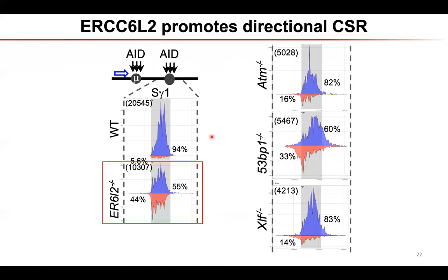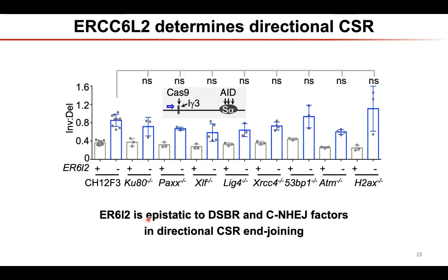We used HTGTS technology to check the end-joining patterns. For wild-type cells there is dramatically biased deletional recombination — about 94% of recombination happens in the deletional way. For 53BP1 or XLF knockouts, this pattern didn't change much. But for ERCC6L2 knockout, the most dramatic finding is that deletion and inversion happen in a one-to-one ratio. We consider this evidence that ERCC6L2 is a specific factor for directional class switch recombination joining.